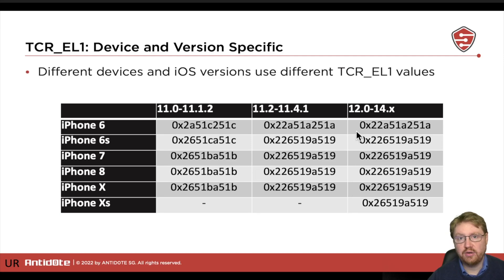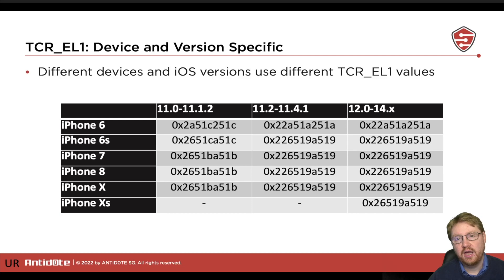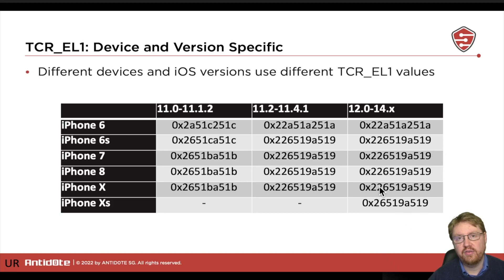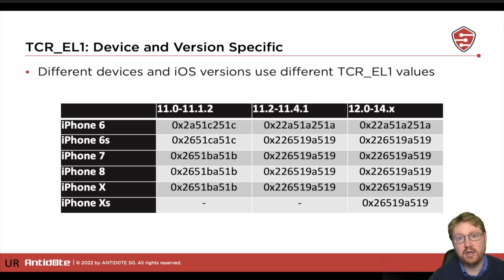Here is an extract of some historic values for different iOS versions and different iOS devices. Basically, on newer devices and newer iOS versions, this here is the way to go — this is the current configuration of this register. But now, what does this value mean? What is it basically selecting?